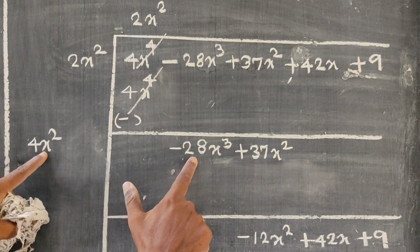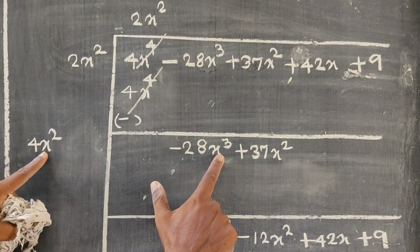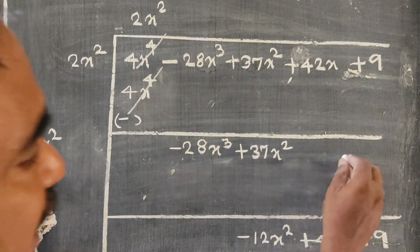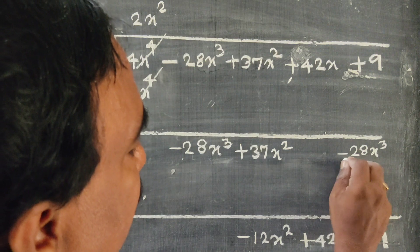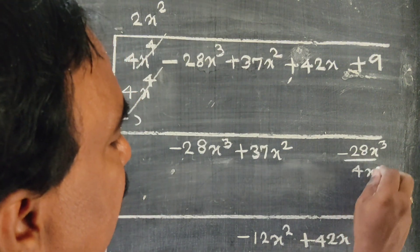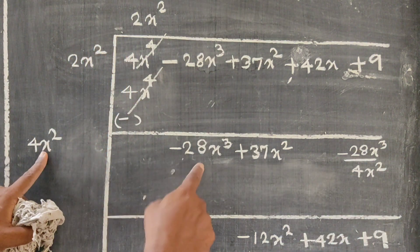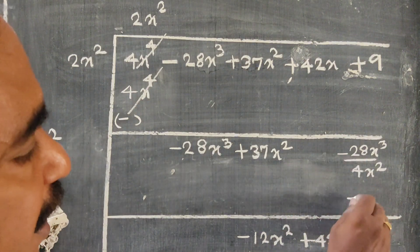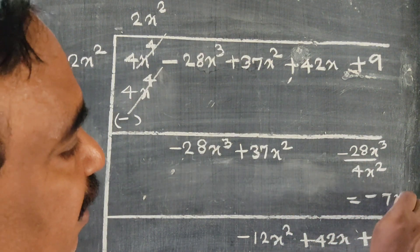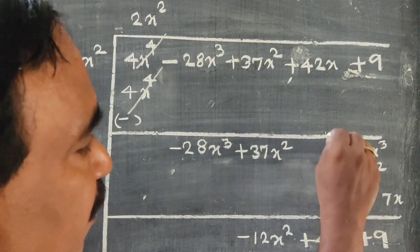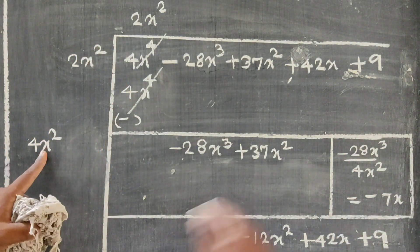Minus 28x³ divided by 4x² — this is the whole divide. The result is minus 7x. This is the side work showing the division step.